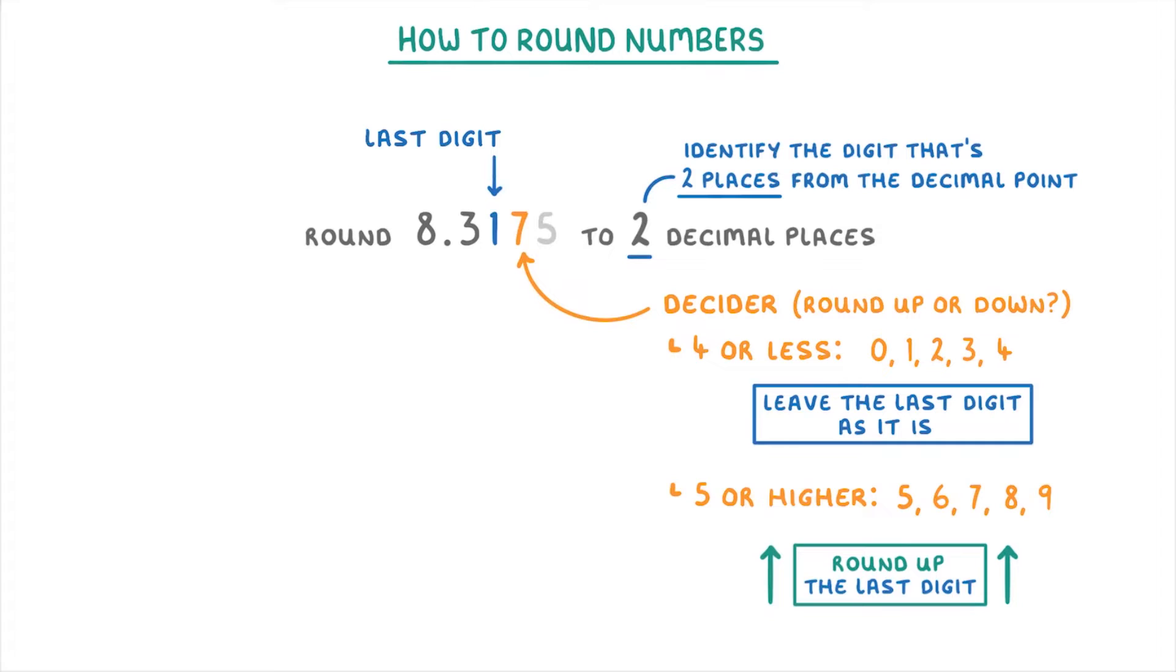So as our decider is 7, we have to round our last digit up and change the 1 to a 2. And then to finish, we just remove all of these other digits that come after the last digit. So we rounded 8.3175 to 8.32.